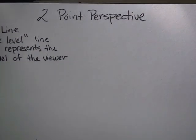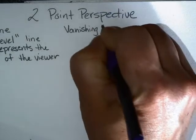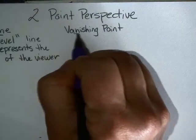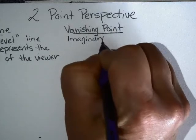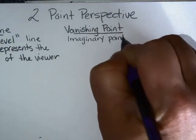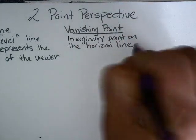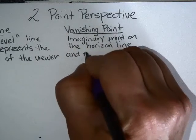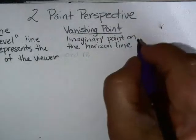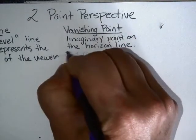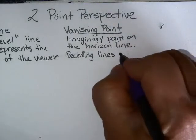So the next term that we used was 'vanishing point.' A vanishing point is the imaginary point on the horizon line. Receding lines converge to these points.